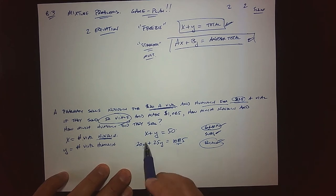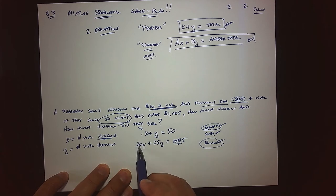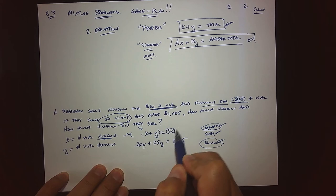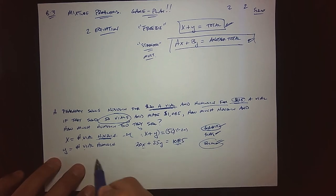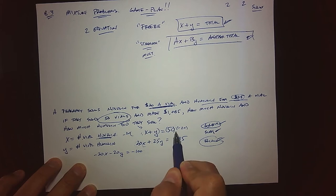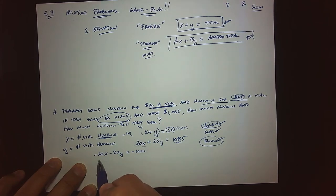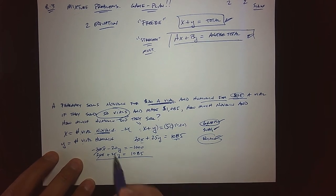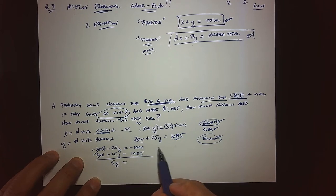To eliminate x, I need the coefficients to be opposites. Since this coefficient is 20, this one needs to be negative 20, so I'll multiply both sides by negative 20. That gives us the new system: negative 20x minus 20y equals negative 1000. The other equation is 20x plus 25y equals 1085, and the x's cancel out by design.